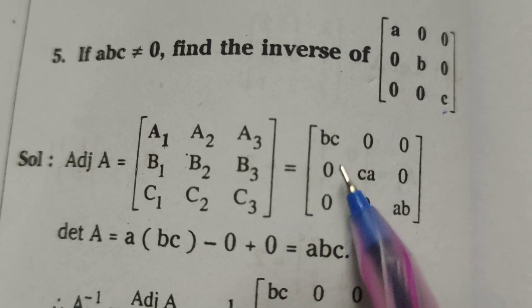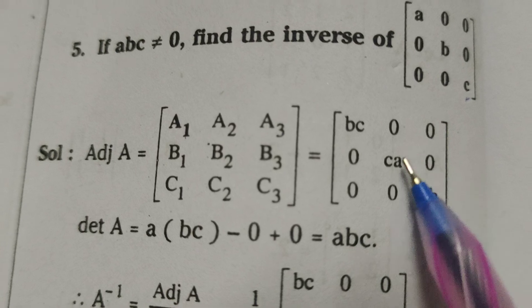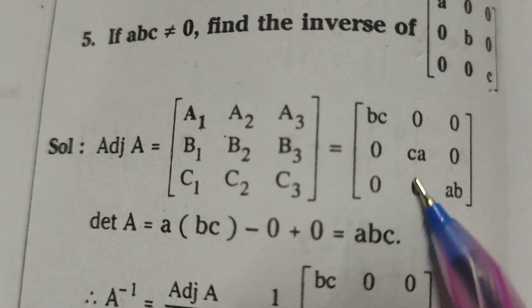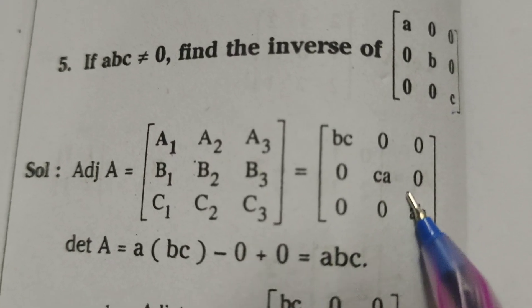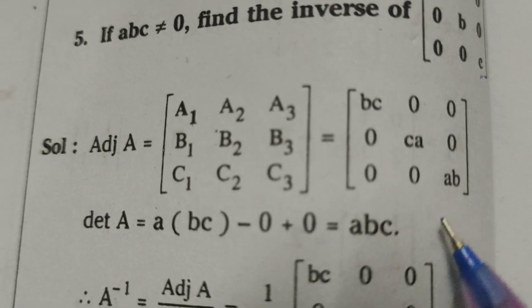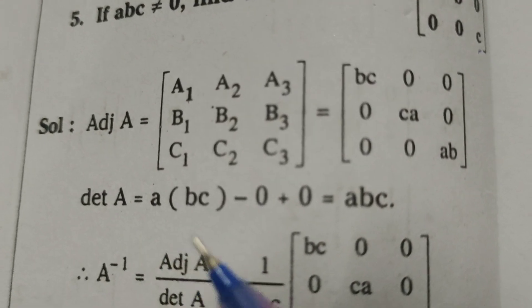Then only here I write bc 0 0, 0 ca 0, 0 0 ab. Find out det A.